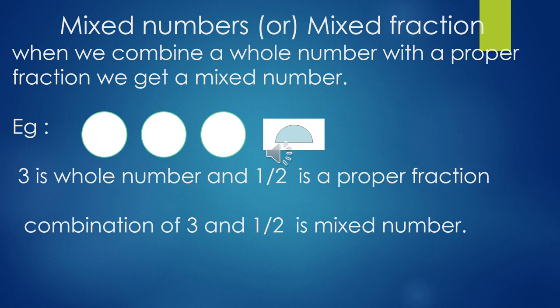Example: three circles are whole and one circle is one-half. Three is the whole number and one half is the proper fraction. The combination of three and one by two is the mixed number three and one half.